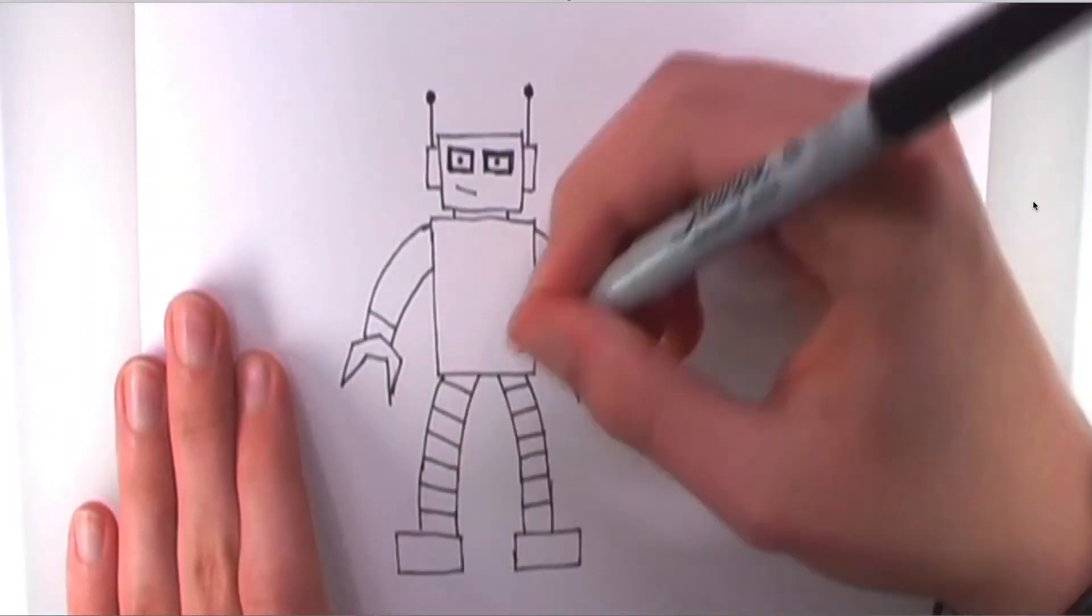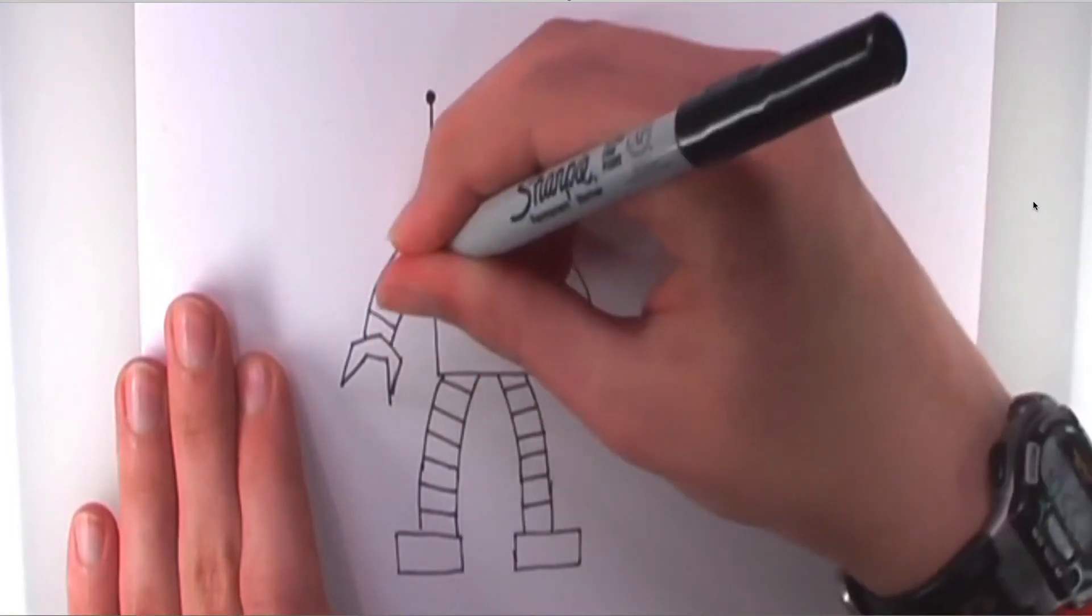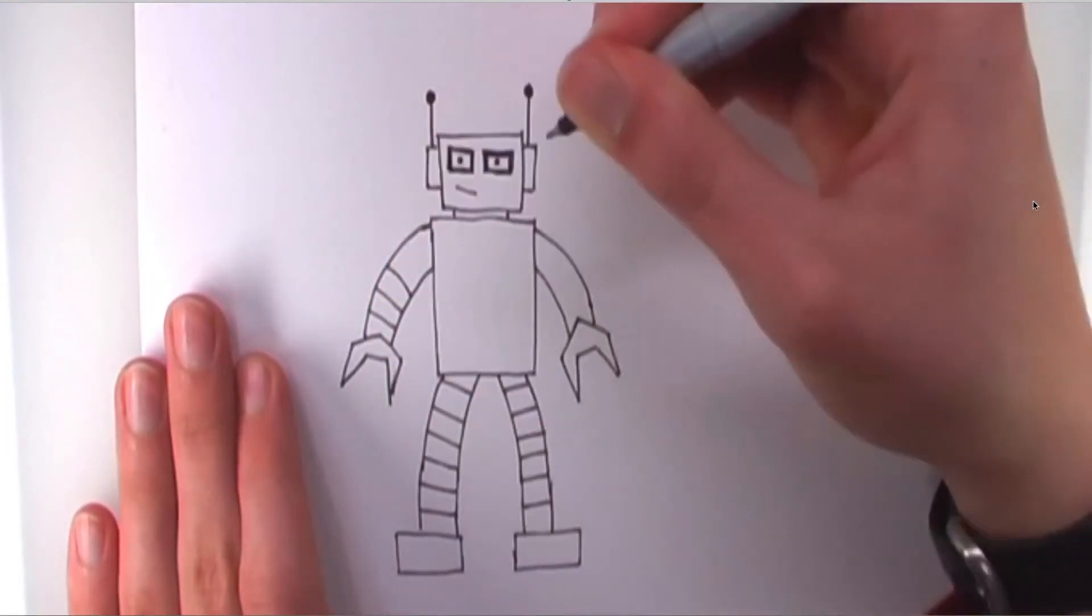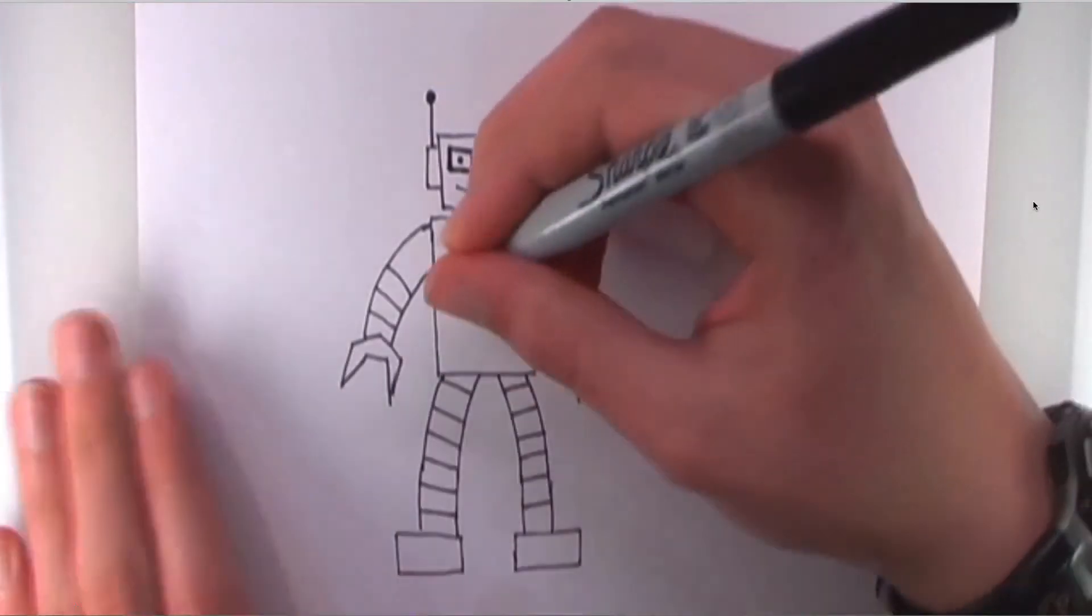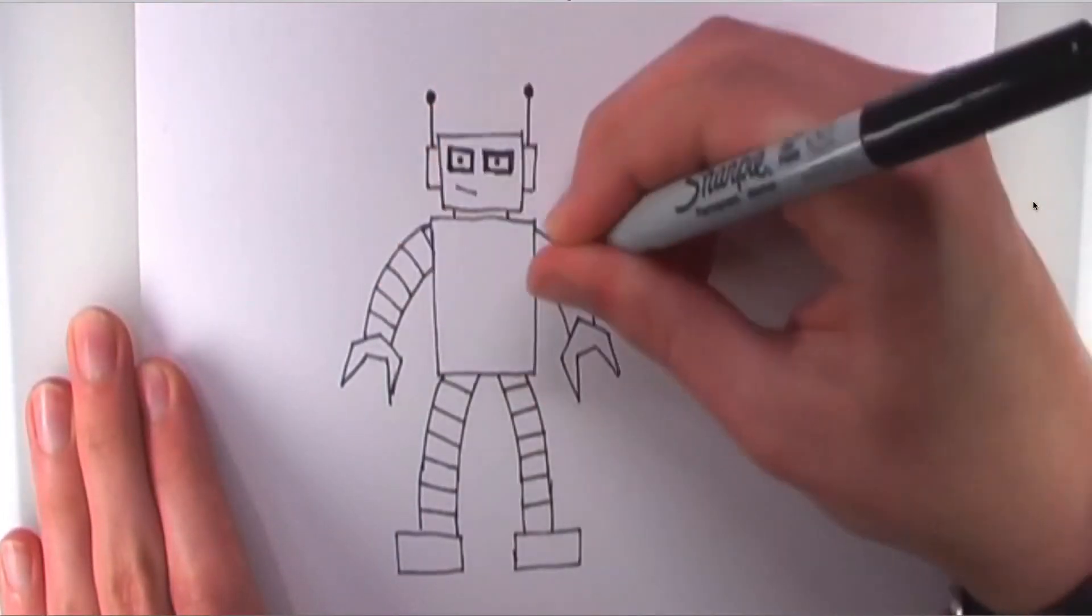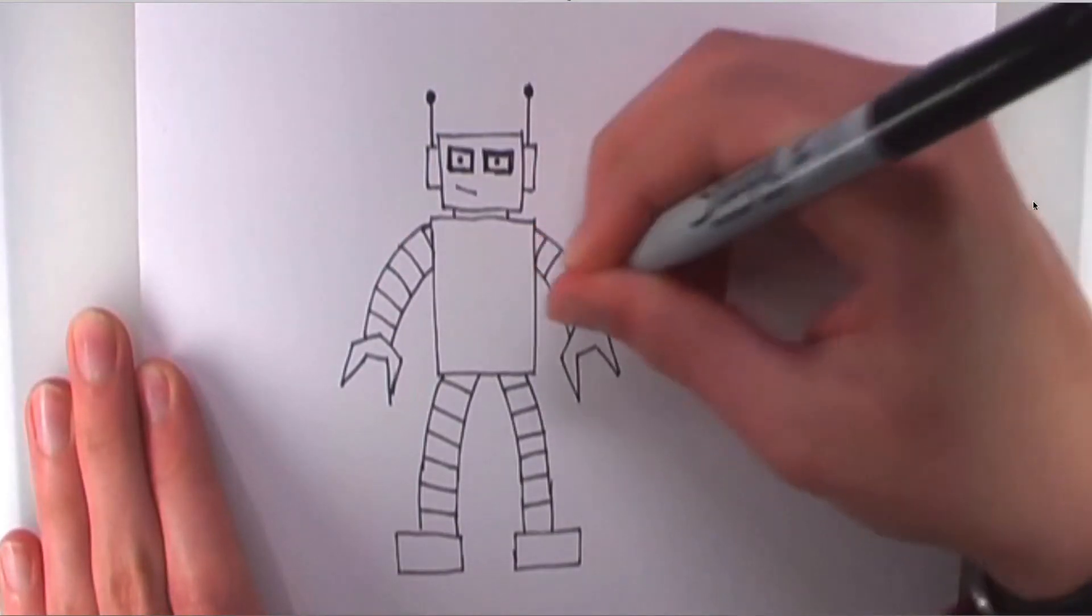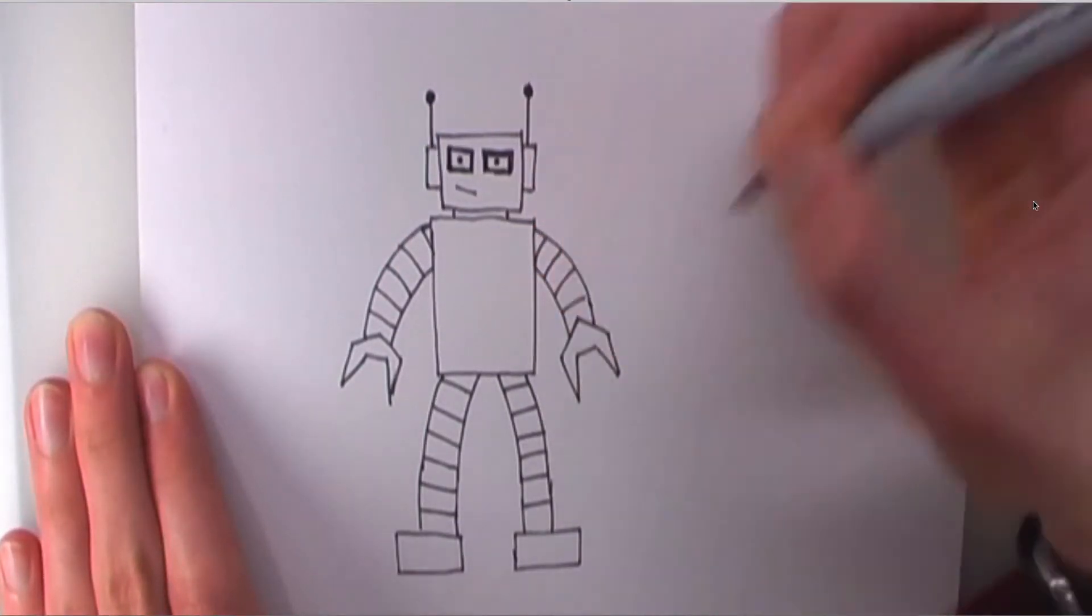Almost forgot. We're going to put lines like on legs on his arms. If you curve them just a little bit, it'll add depth and make his arms look like they're round.